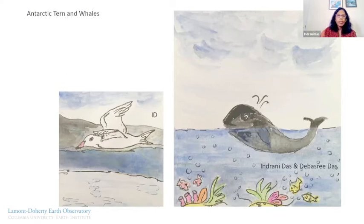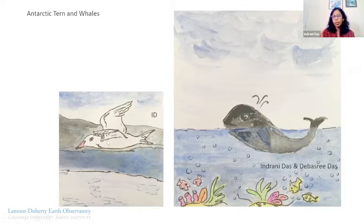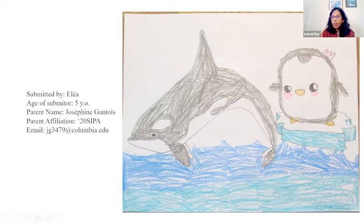I wanted to draw a bird, so I did the Antarctic tern. You should look up the Antarctic tern — it's a very beautiful bird. I really like Antarctic birds because they are so robust. Those birds live in Antarctica all year round, and how they survive that climate is a wonder to me. And then Ilya — I hope I pronounced your name correctly — she's five years old and she drew this beautiful whale and a penguin. The penguin is sitting on an iceberg and has ribbons on. This is a beautiful penguin. Thank you very much, Ilya, for sharing this with us.